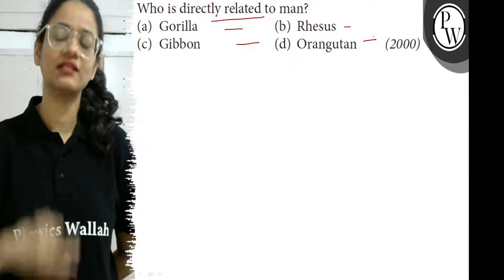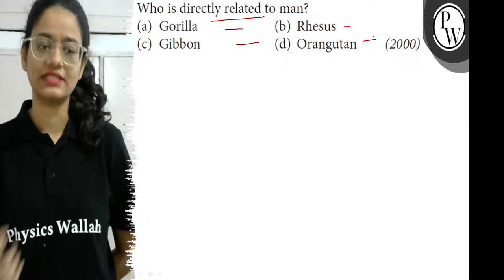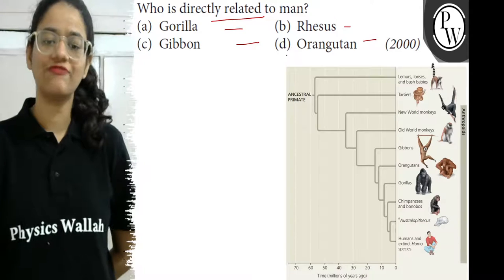So among these four options, which is most closely related to man? Let's see this image showing a phylogenetic tree.